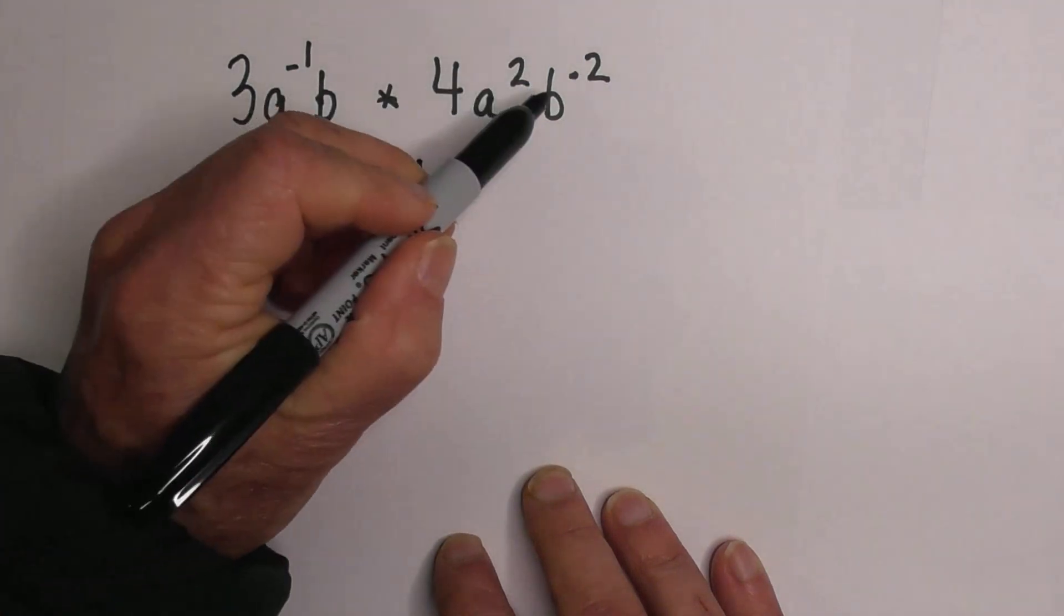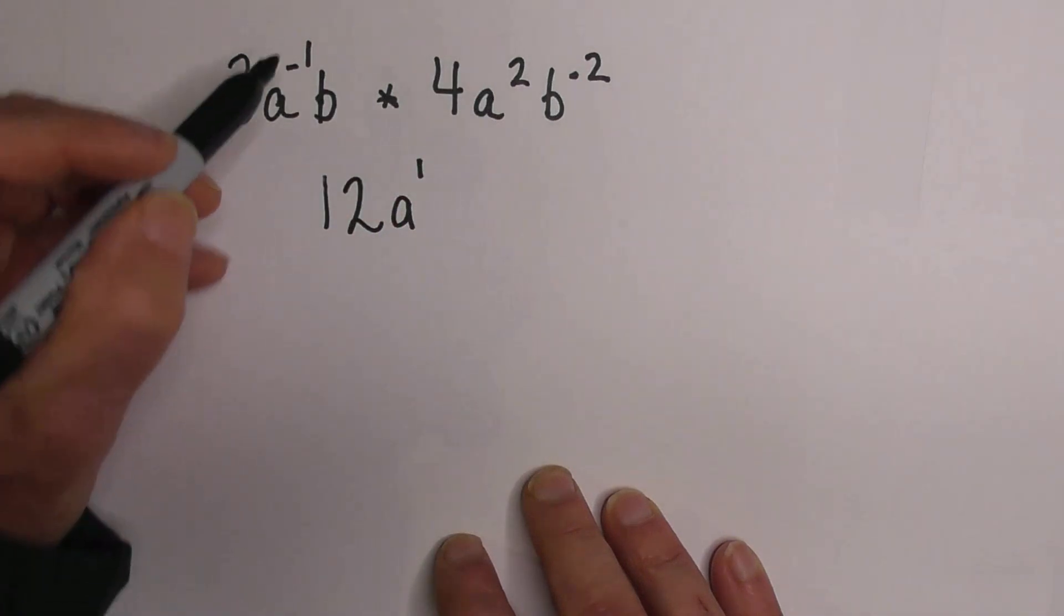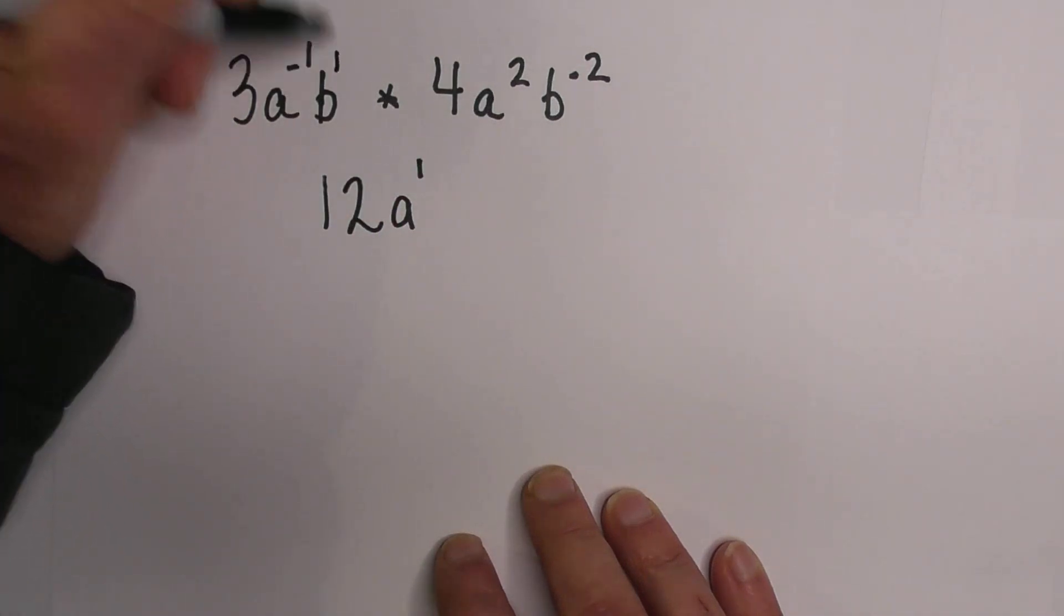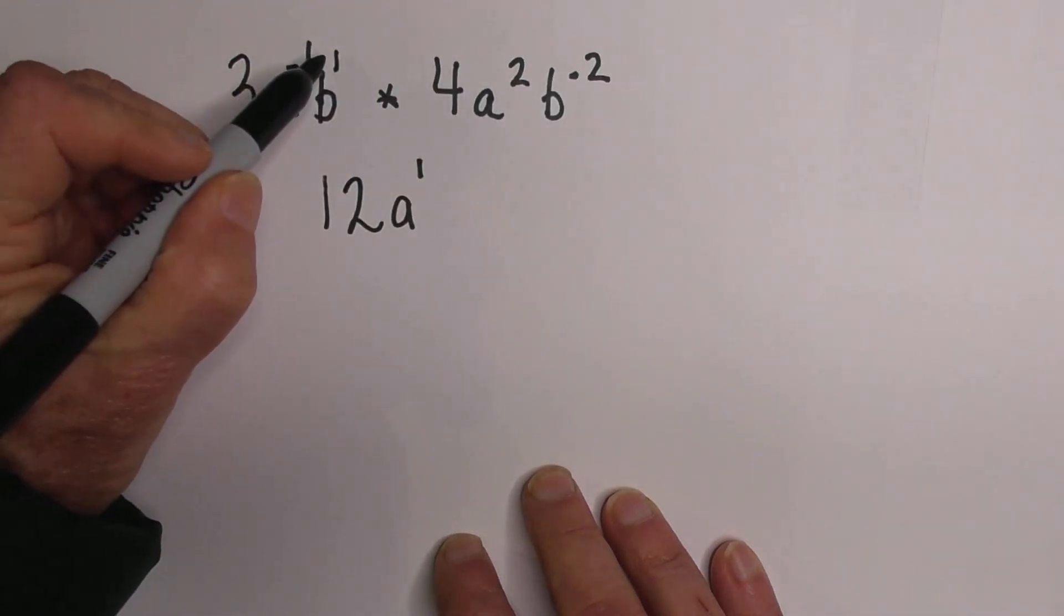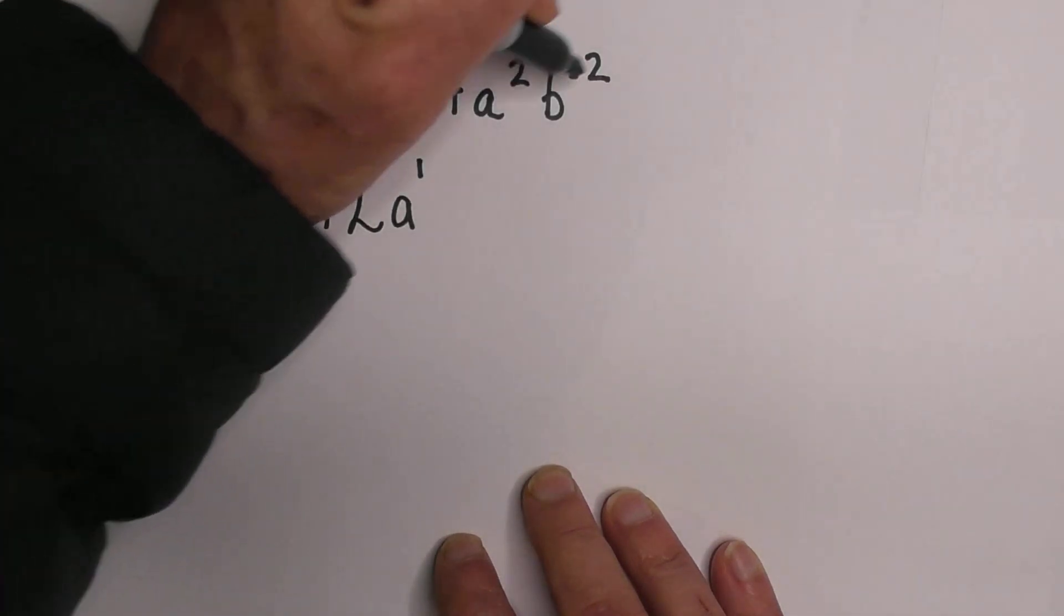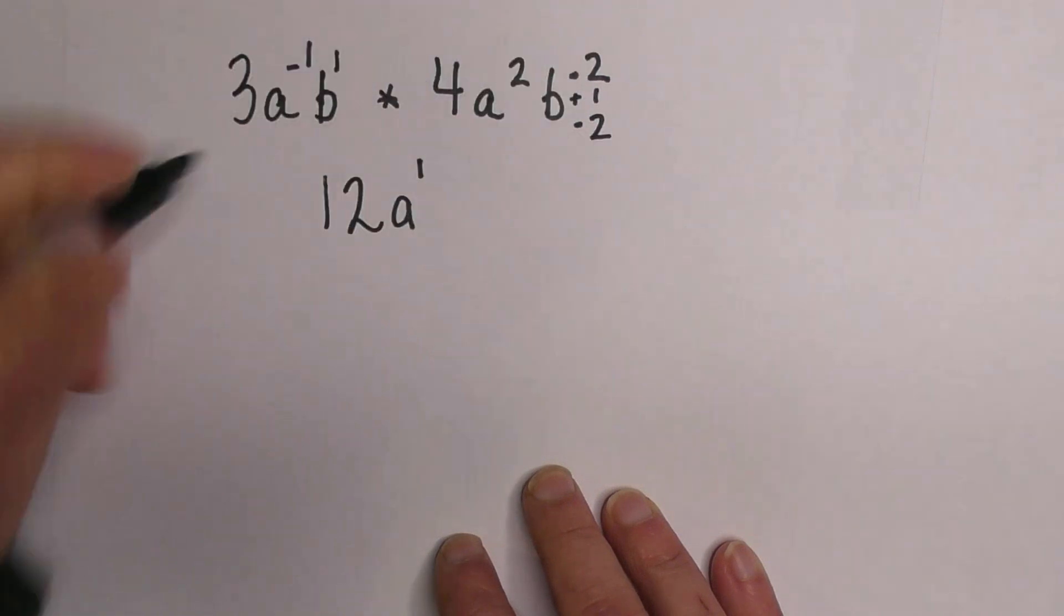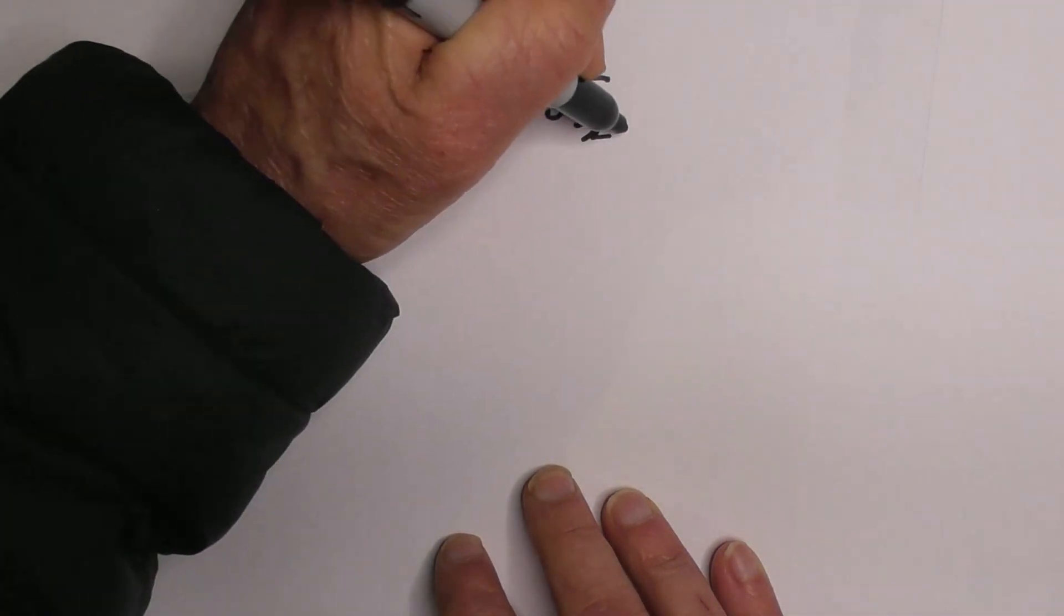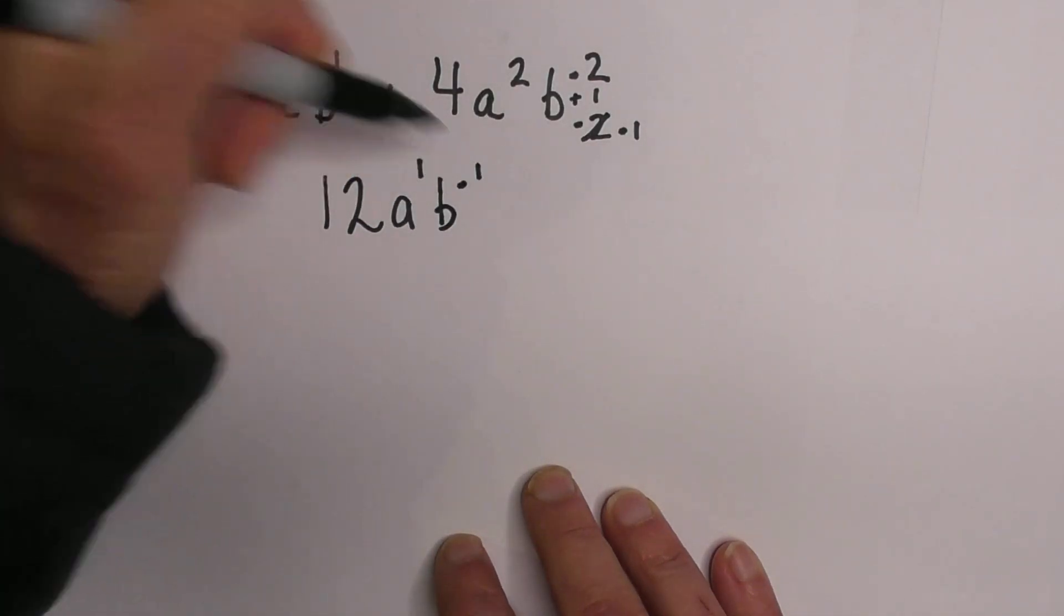And then we're going to do the same with B. We would multiply the bases and add the exponents. So with this B, we can place a 1 right there. So we have a negative 2 and a positive 1. A negative 2 and a positive 1 equals a negative, excuse me, not negative 2, a negative 1. So that's going to become the negative 1.